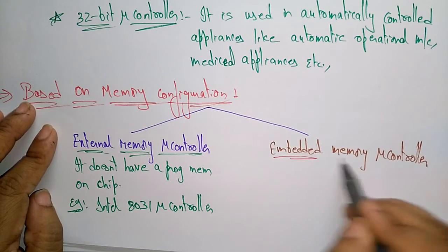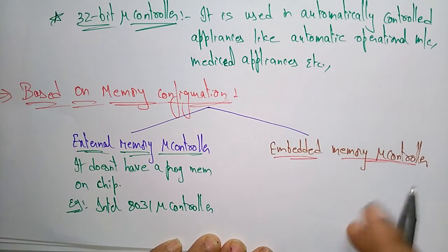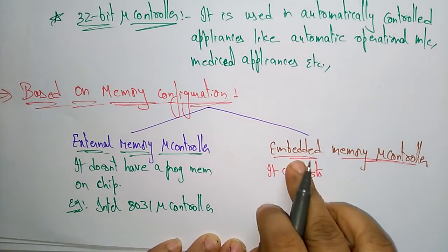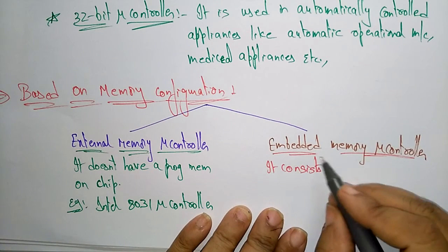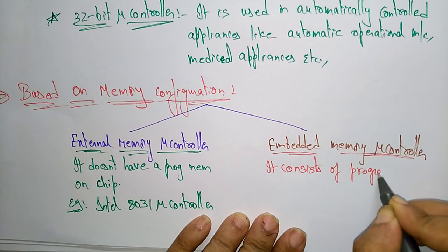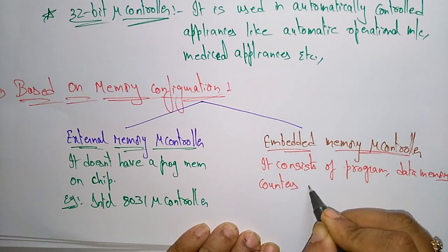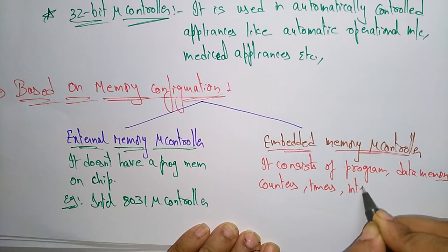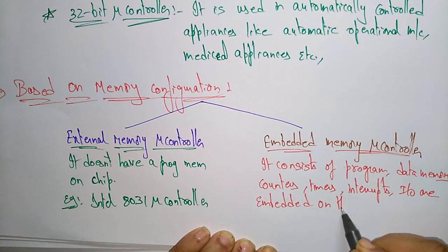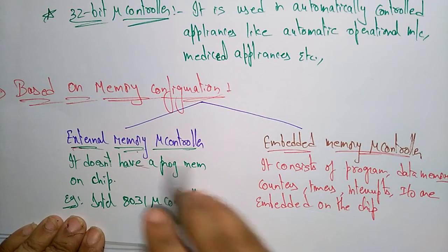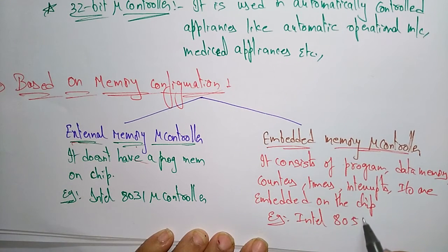The embedded memory microcontroller is designed so that the microcontroller has all programs and data memory on a single chip. It consists of program memory, data memory, counters, timers, and interrupts — all embedded on the chip. The example is the Intel 8051 microcontroller.